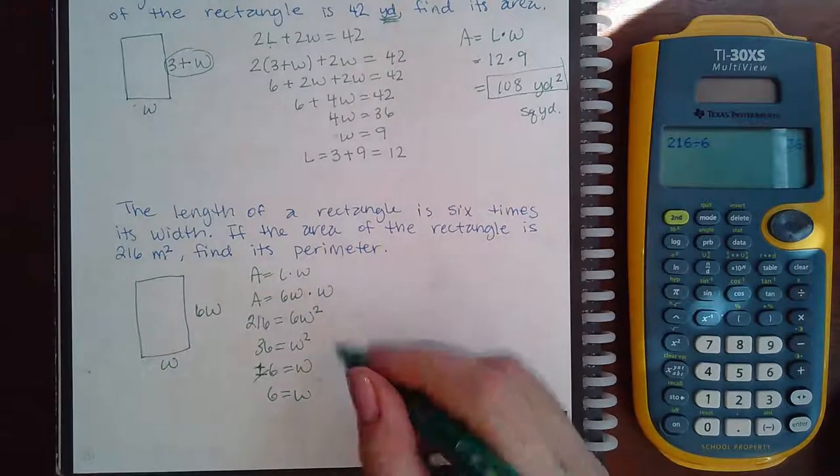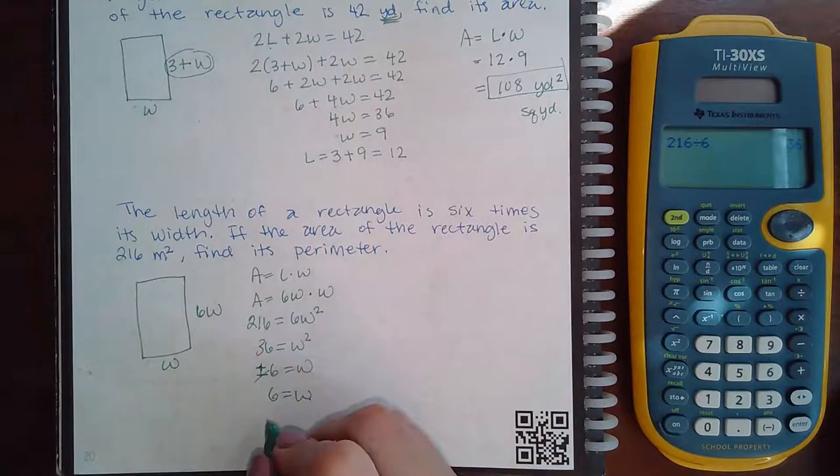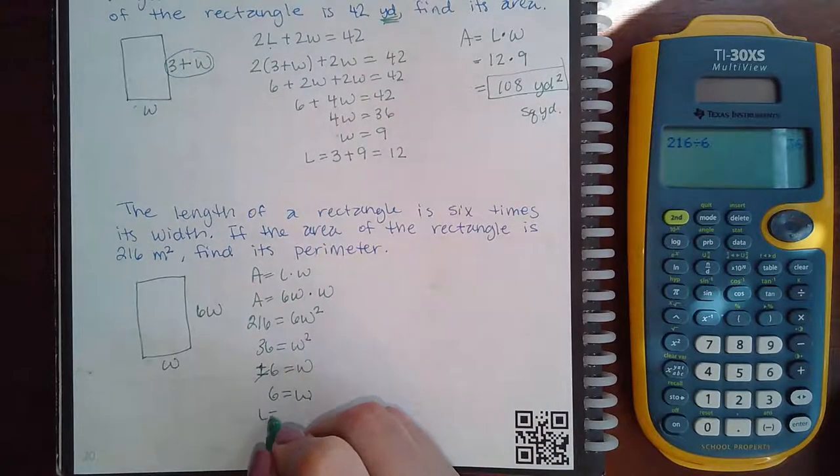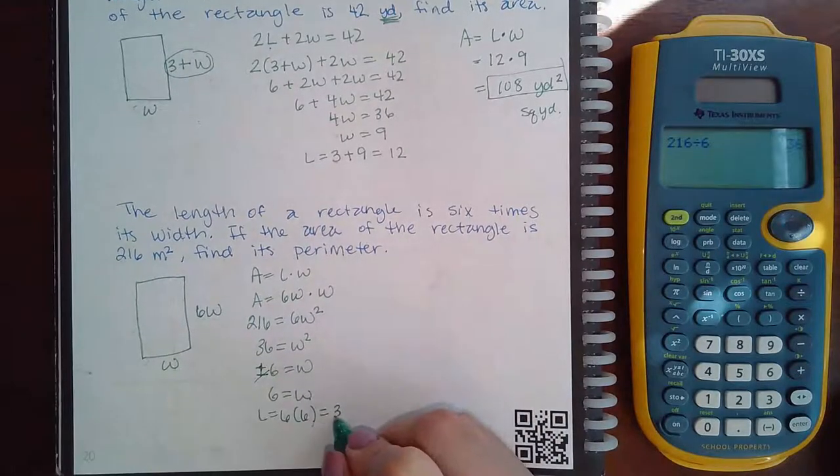Now, how do I figure out the width? Go back, or the length, I'm sorry. Remember, the length is 6 times W. So 6 times 6, which is 36.